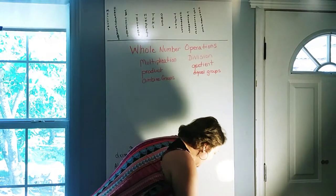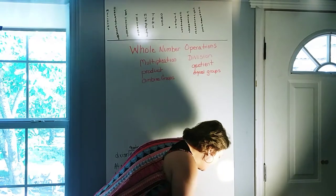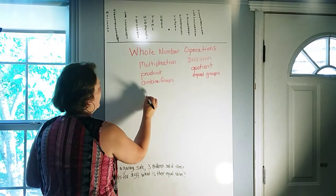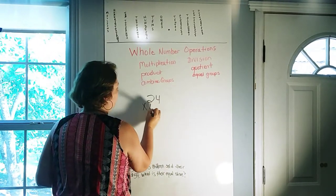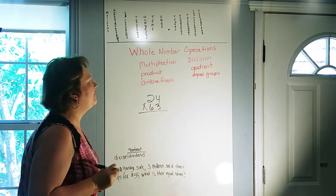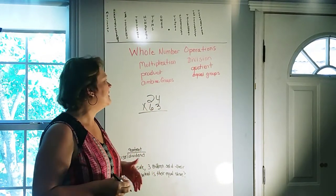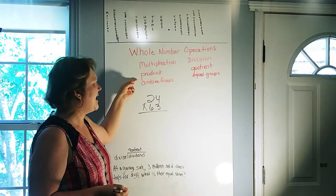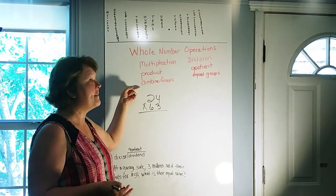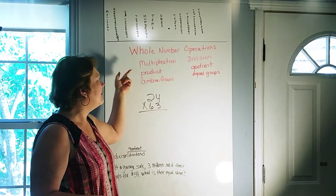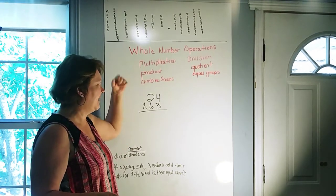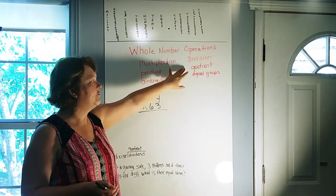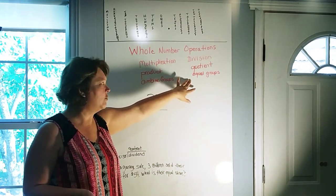Alright, so let's look at our first problem. It just gives us a couple numbers to multiply, and that is 24 and 63. I put up here a few words to cue you in when you're doing word problems. If you're going to be doing multiplication, they may ask you for the product of some numbers, or they may have asked you to combine groups of numbers. If the word problem calls for you to do division,